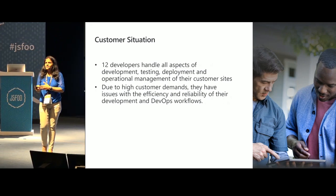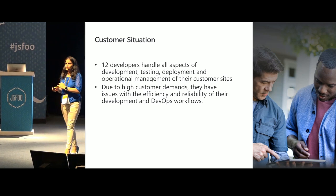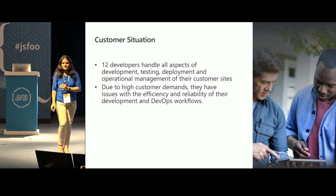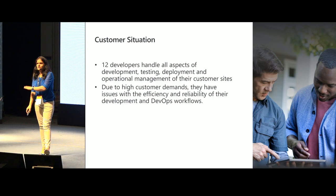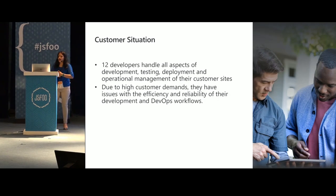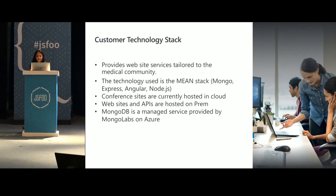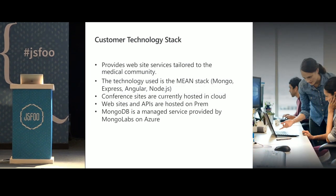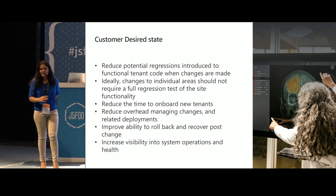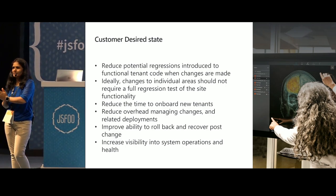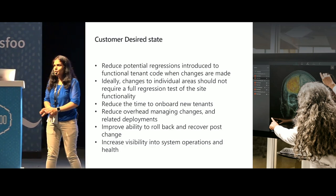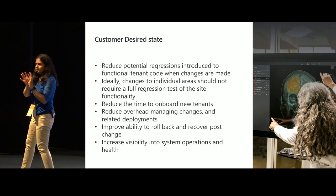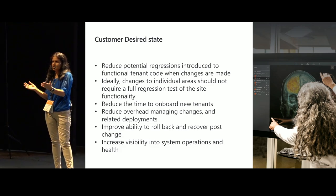They had a team of developers responsible for development, testing, and managing all operational stuff when code is in the production environment. They were having high customer demands because requirements changed on an ad hoc basis, and all code changes had to be reliable — it's not like they could make a change and have the production environment break. Their requirement was that whenever they hosted any conference, all the features that specific customer needed should be hosted on a separate end, as a separate entity, so there was clear segregation between all customers.